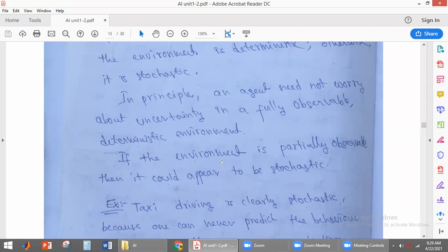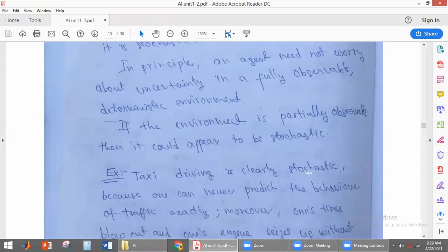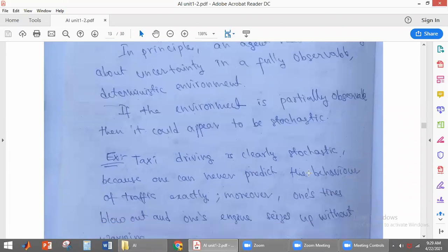If the agent is partially observable, then it could appear to be stochastic. In the case of partially observable environment, we cannot predict what is the next state. We cannot determine what is the next state of the environment. So partially observable environments will give the stochastic environment.